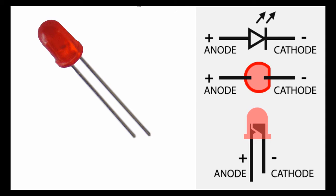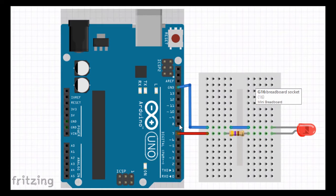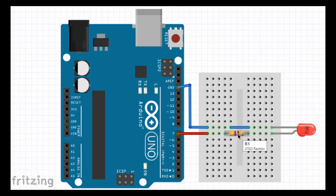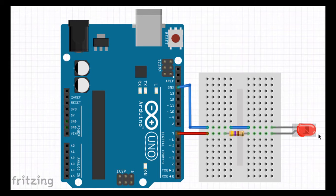Okay, let us build our circuit. We're going to use an Arduino and a breadboard — this makes prototyping very easy. The longer lead, which is the anode, is going to be connected to our digital output pin. You can use any digital output. In this example we're going to use D7, through a 470 ohm resistor, and the cathode lead or the negative lead of the LED is connected to ground of the Arduino.